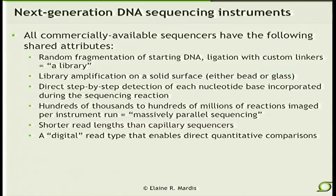Each read of a massively parallel sequencer originates from one fragment in the library, even though it's amplified. What that means is you can literally apply counting-based methods to the analysis of these data — for example, determining how many tumor cells in the collective that produced DNA for a tumor genome actually contain each one of the mutations you've detected. You can look at the number of counts for a given messenger RNA and look at quantitative aspects of sequencing as we've never been able to do before. This is a tremendously exciting application space for next-generation sequencing.